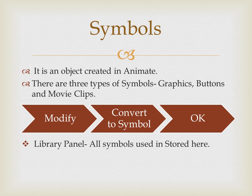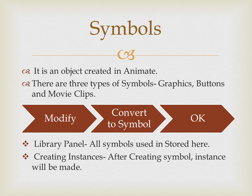The next is the library panel. All symbols used in an animated movie are stored in the library panel. The next is creating instances. After creating a symbol, the user can create an instance of it by selecting the symbol from the library panel and dragging it onto the screen.